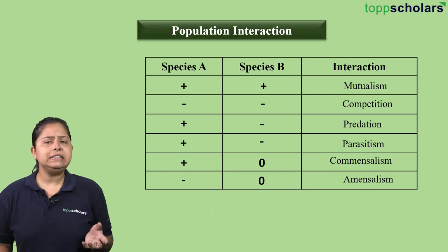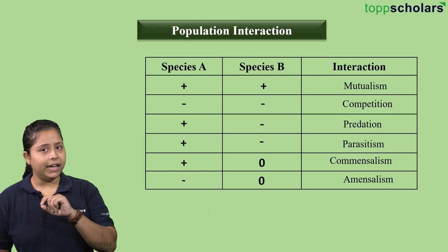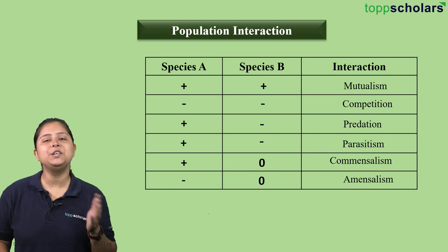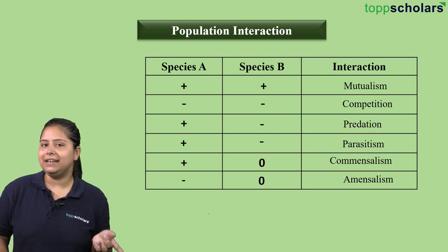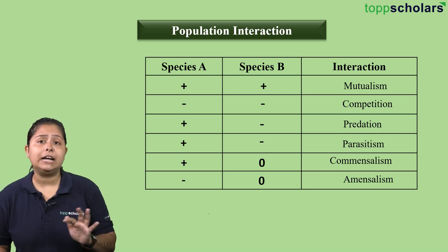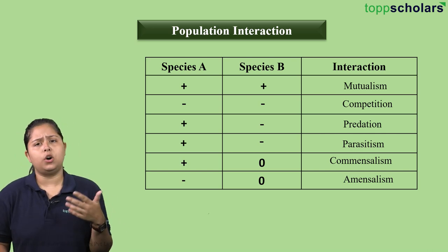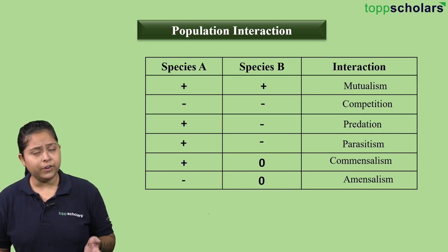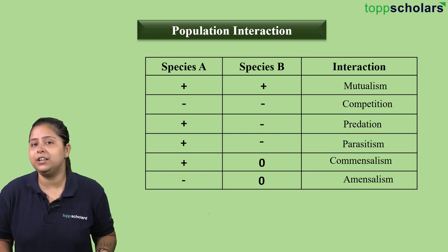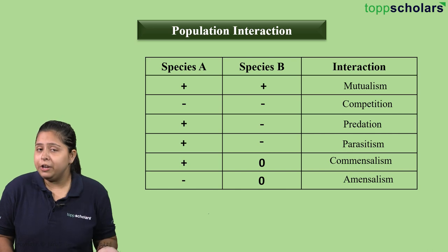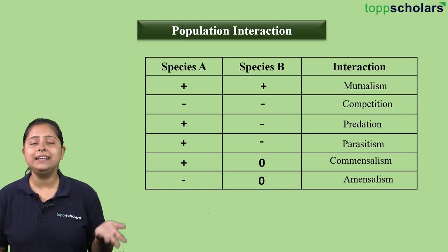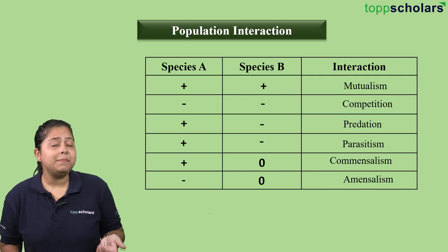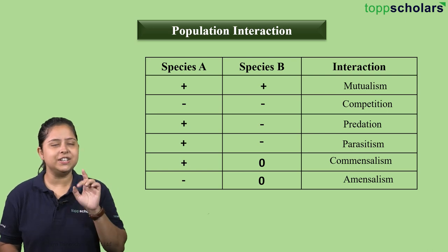For amensalism, we have one minus sign followed by a zero sign. A simple trick: write 'A' with a dash, and that dash links to a minus sign — so amensalism has minus and zero. In commensalism, the letter C has no dash, so there's a plus sign. Remember: plus sign for beneficial, minus for detrimental, and zero for neutral interaction.